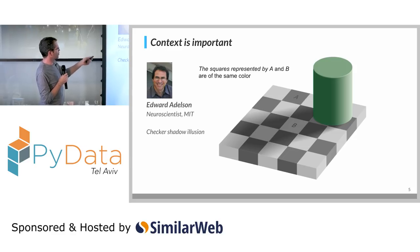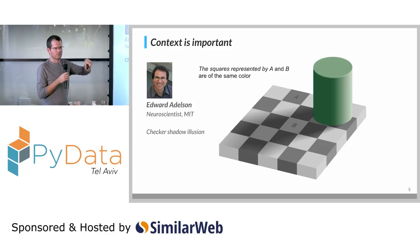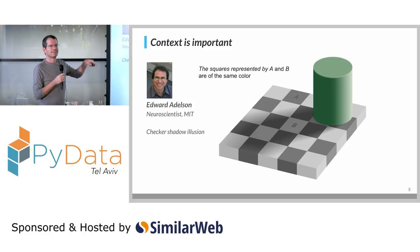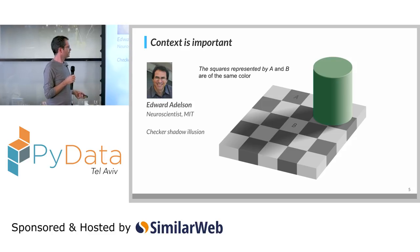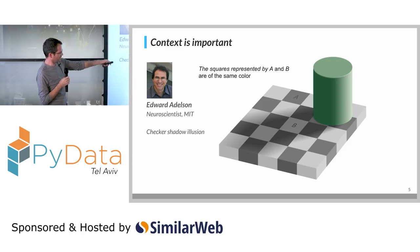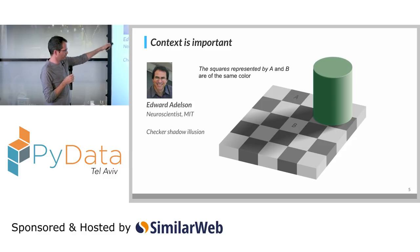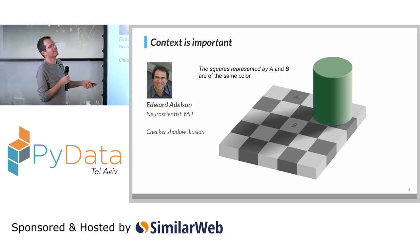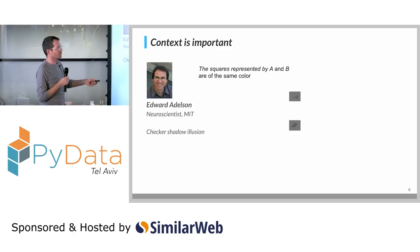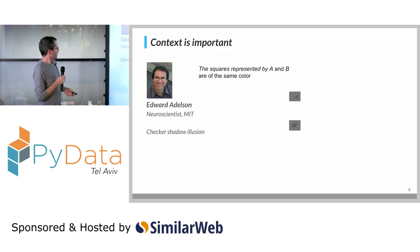This is the checker shadow illusion, just to show you that context is important. Look at the squares represented by A and B and try to confirm that they actually have the same background color. It's actually the same color. People who don't know this will think B is lighter than A, but it gets darker because of the shadow dropped by the green element. It's the context surrounding B that makes us believe B is a light box, so it has to be lighter than A. But you can cover everything else and you'll see it immediately.